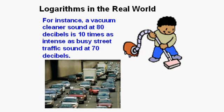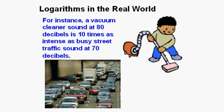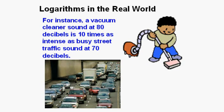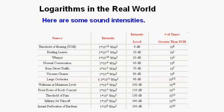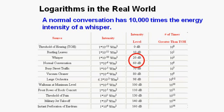For instance, a vacuum cleaner sound at 80 decibels is 10 times as intense as busy street traffic sound at 70 decibels. Here is a list of sound intensities. A normal conversation in a room at 60 decibels has 10,000 times the energy intensity as a whisper at 20 decibels.